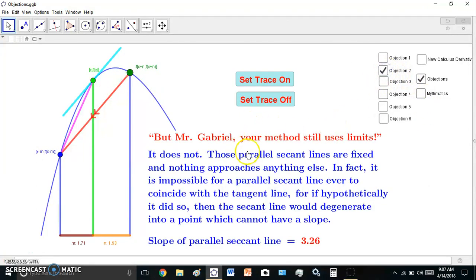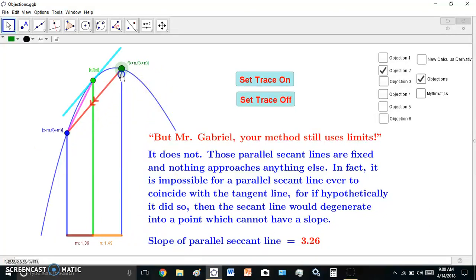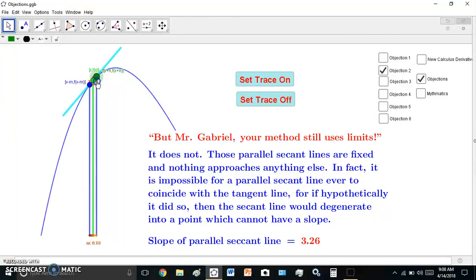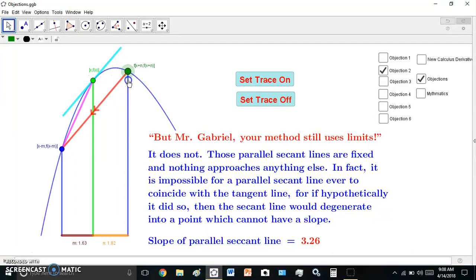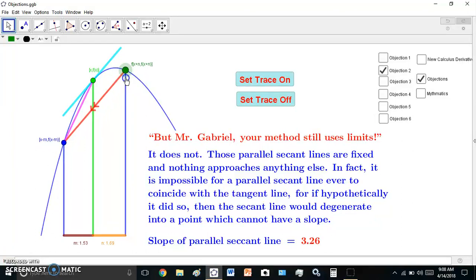The second objection is that the method uses limits. No, nothing here happens with limits. There are no lines approaching any other lines. And if hypothetically, these so-called parallel lines did approach the point of tangency, then there would be no slope. So the new calculus is rigorous, it doesn't have any monkey business like your normal mainstream calculus.